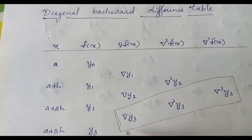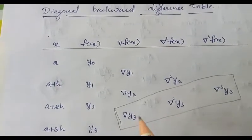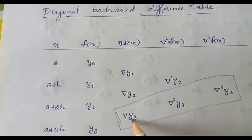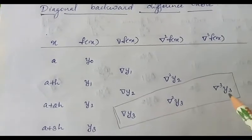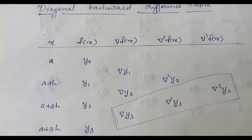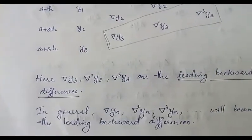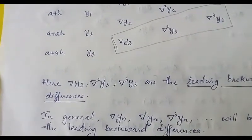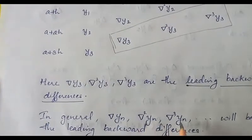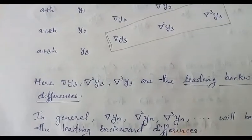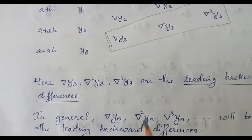The leading backward differences are del y3, del squared y3, del cube y3, and so on — that is, the values at the end of the diagonal backward difference table.